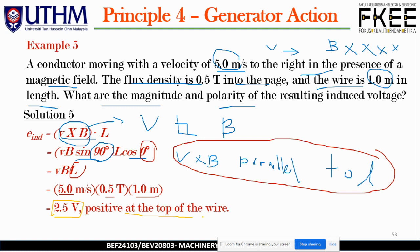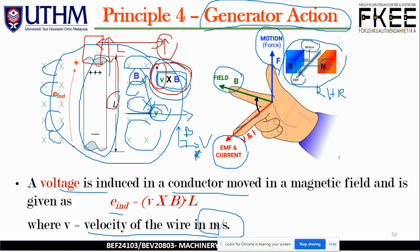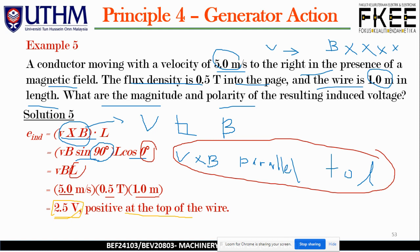The positive end is in the direction of vector v × B, which points upward. The upper part of the conductor is where the positive terminal is located. The magnitude is 2.5 Volts and the polarity is positive at the top of the wire.